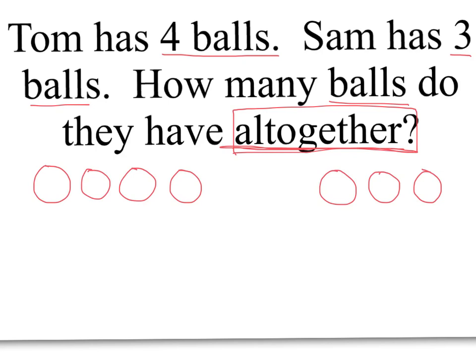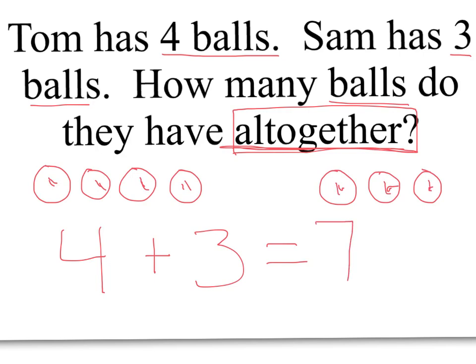I'm going to take four — one, two, three, four — plus Sam's one, two, three balls, equals. How many do I have all together? I have one, two, three, four, five, six, seven. Seven. And now I need a label. What have we been talking about in this story? You're right — we've been talking about balls. So 'balls' is my label.